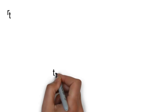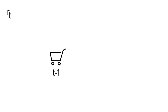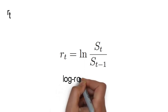So it's the return you earn when buying an asset, let's say at time t-1 and selling it at time t. For example, here rt defined as the log of st divided by st-1 is the continuously compounded return, also called log return.